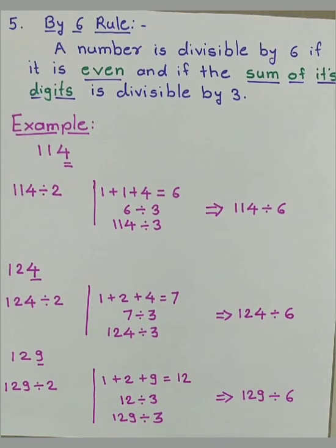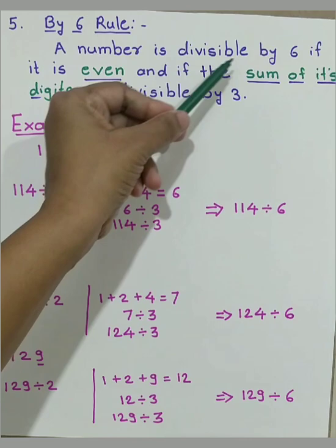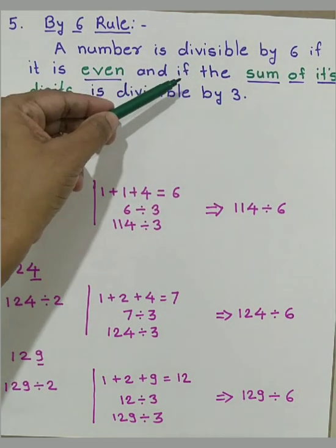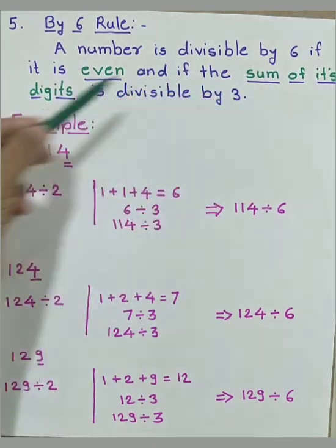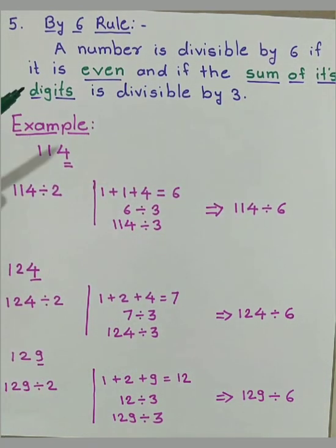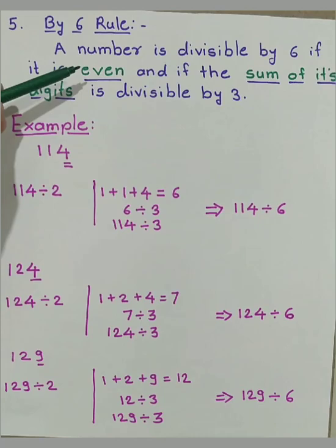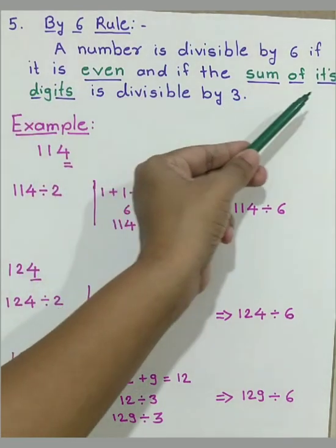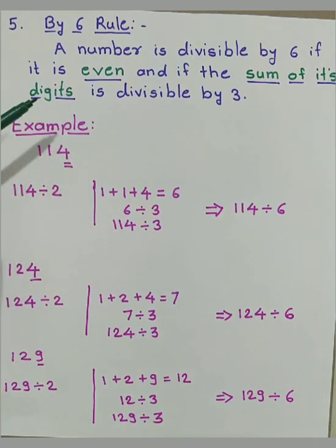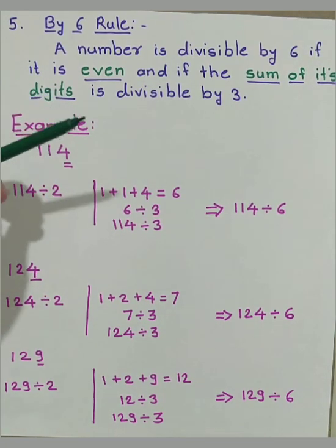That is by 6 rule. 6 is a product of 2 and 3. So let's see what the rule says. A number is divisible by 6 if it is even and if the sum of its digit is divisible by 3. It has two conditions. Indirectly this rule is saying, a number should pass rule of 2 and rule of 3. Let's understand with the example.